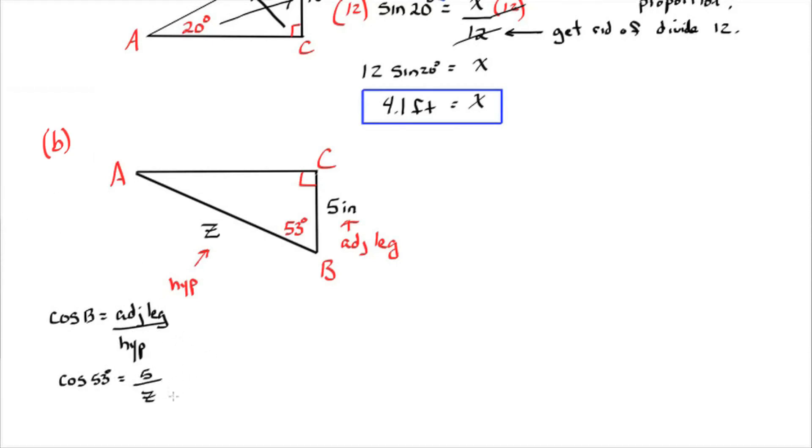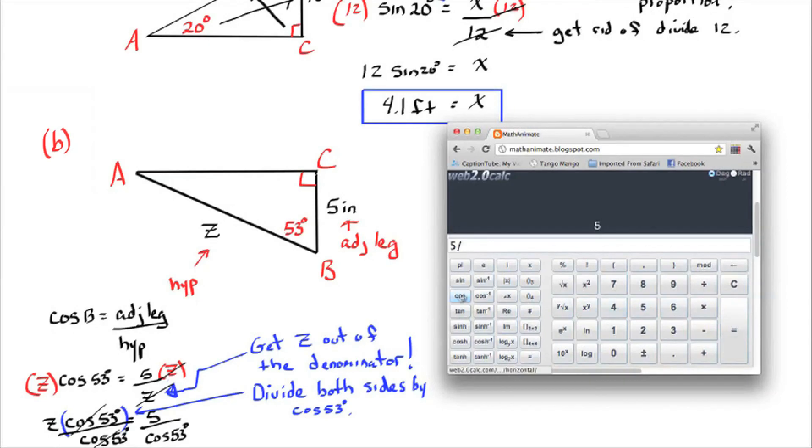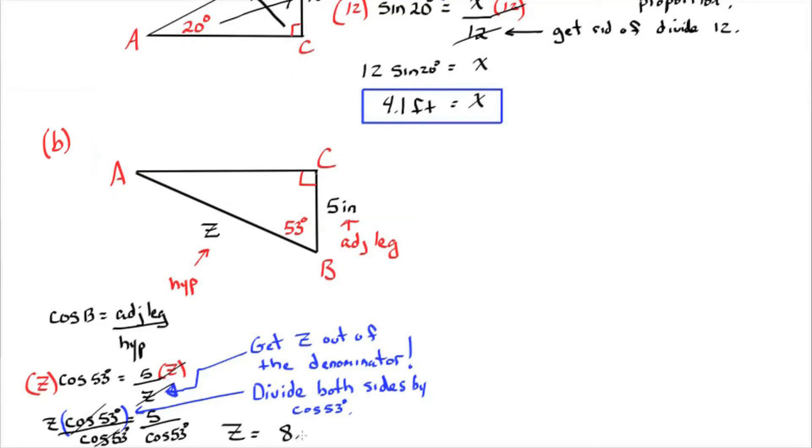Cosine 53 equals 5 over Z. My unknown is in the denominator this time. So I need to get Z out of the denominator by multiplying it to both sides. Now cosine 53 is a number just like any other. So the inverse operation of multiplying is dividing. So I'm going to divide cosine 53 to both sides. And I go to my calculator. 5 divided by cosine 53. And I get 8.3 rounded to the nearest tenth. So that would be Z equals 8.3 inches. Box it in.